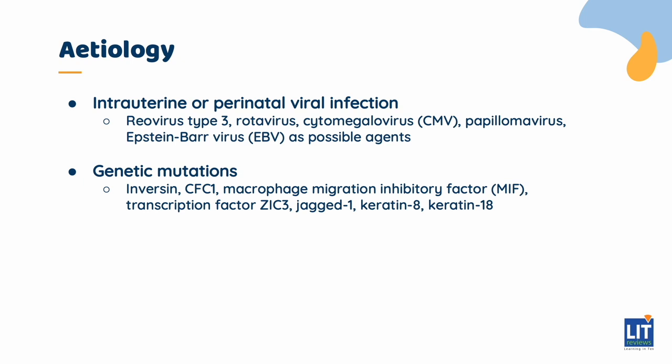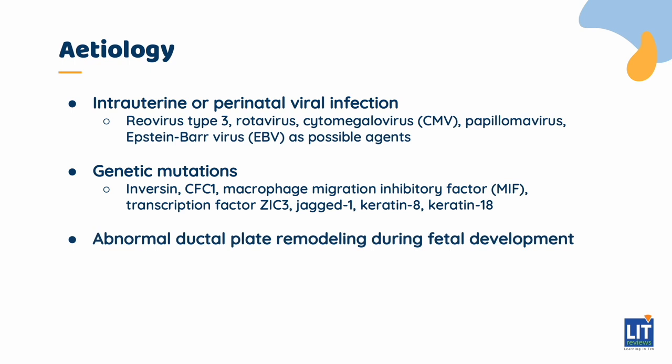Other genes having a possible role in the development of the disease include macrophage migration inhibitory factor, transcription factor ZIC3, JAK1, keratin 8, and keratin 18. The intrahepatic biliary system is formed during early gestation through the remodeling of ductal plates, which are formed by primitive hepatocytes and associated mesenchyme. It is possible that non-syndromic biliary atresia might be caused by a failure of bile duct remodeling at the hepatic hilum, leading to persistence of fetal bile ducts poorly supported by the mesenchyme.